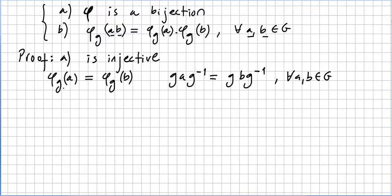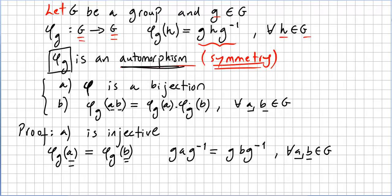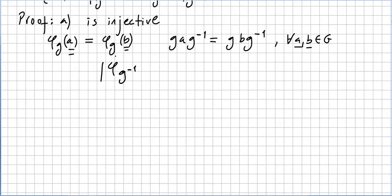Suppose for some a and b in G we have φ_g(a) = φ_g(b). Since φ_g(h) = g · h · g⁻¹, this means g · a · g⁻¹ = g · b · g⁻¹.